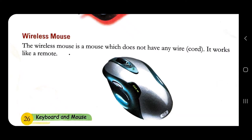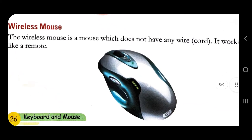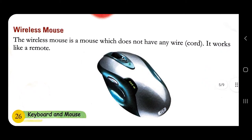The third type of mouse is the wireless mouse. From the name itself we can tell that this mouse does not have any wire. It works like a remote — like a TV remote or an AC remote — where there is no wire. Similarly, the wireless mouse has no wire. See the picture; this is how it looks — no wire at all.